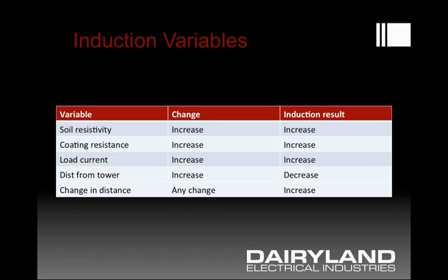Here's the relationship between induction and other factors. If soil resistivity increases, the induction on the pipe — all things equal — also increases; the soil along with the coating makes the pipe look more isolated from earth, like a better insulation system. If coating resistance increases, the same result happens — better coatings mean this is more of a problem. As load current on the power line increases, so does the magnetic coupling and induction on the pipe. With increasing distance from the tower, induction decreases, producing lower induction and also lower arc risks. However, if there is ever a change in distance from the pipeline to the power line, any change at all will result in increased induction at that point of change.